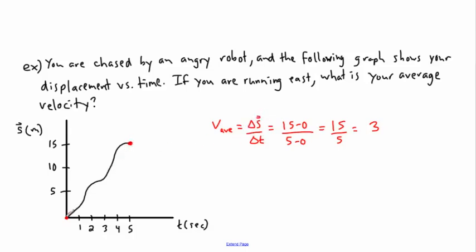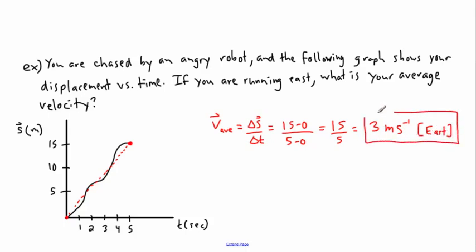The units are 3 meters per second — meters from displacement divided by seconds from time. I'm essentially finding the slope of the line joining the two endpoints; I don't care about the path, just the slope between those two points. Since average velocity is a vector, I must include direction: so my average velocity is 3 meters per second east, meaning every second I go 3 meters farther east.